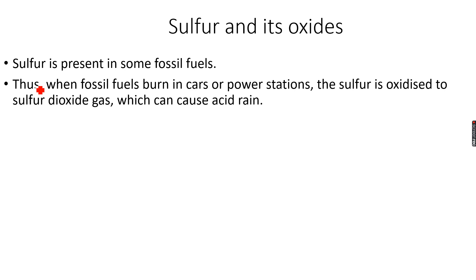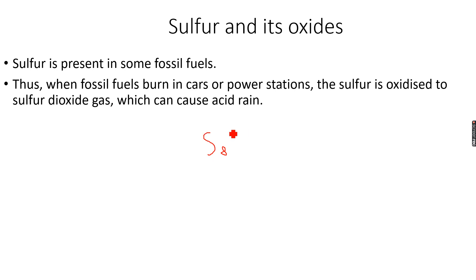Sulfur dioxide results in the formation of sulfuric acid when it reacts with nitrogen dioxide, leading to acid rain, which can be very harmful. Sulfur is a covalent molecule, generally present in the form of S8 — eight sulfur atoms covalently bonded together. Because of this structure, it has a high melting point and boiling point, and is a solid at room temperature.